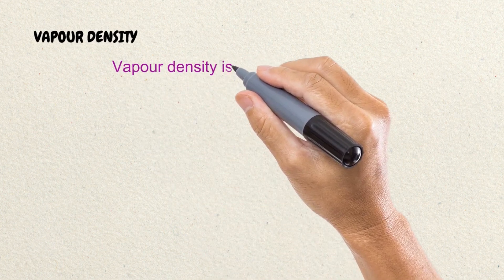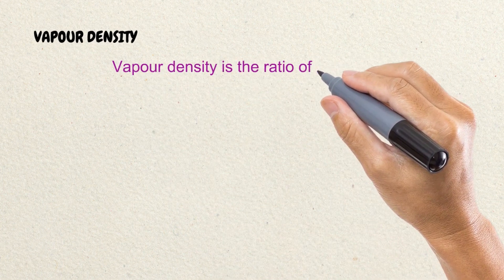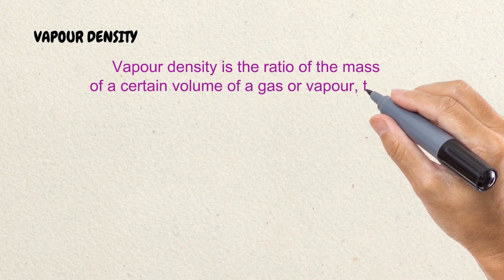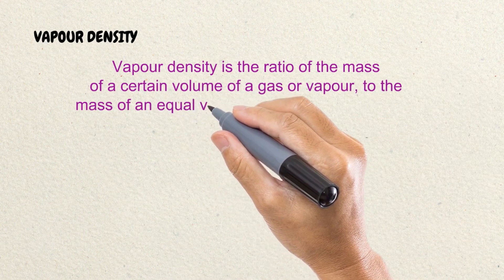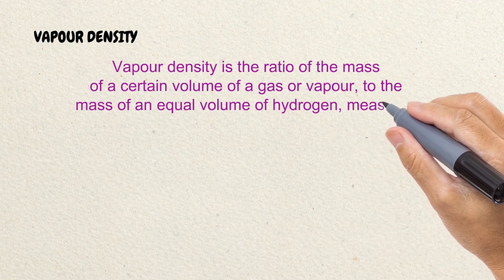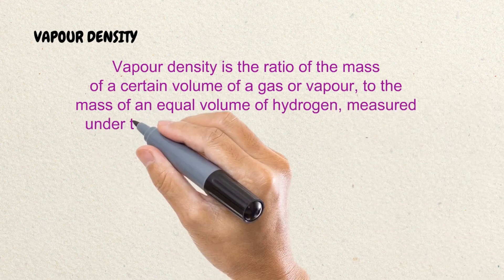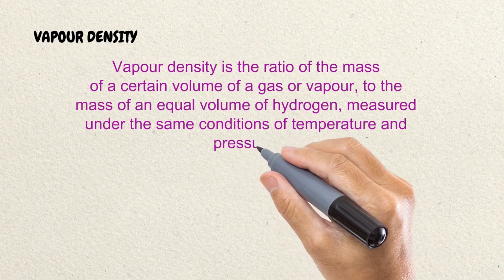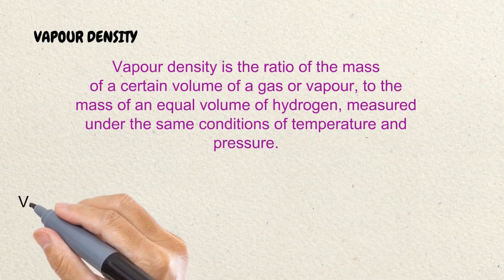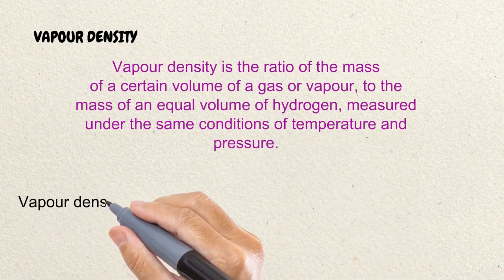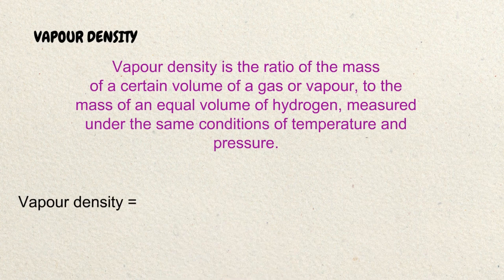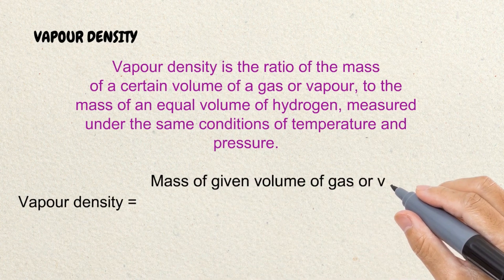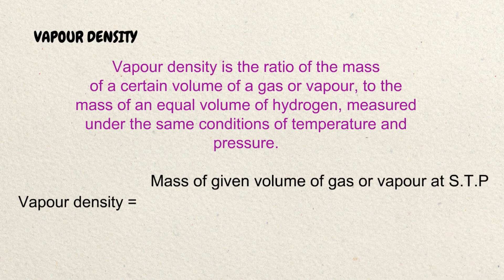Vapour density is the ratio of the mass of a certain volume of gas or vapour to the mass of an equal volume of hydrogen, measured under the same conditions of temperature and pressure. So, vapour density is equal to the mass of a given volume of gas or vapour.